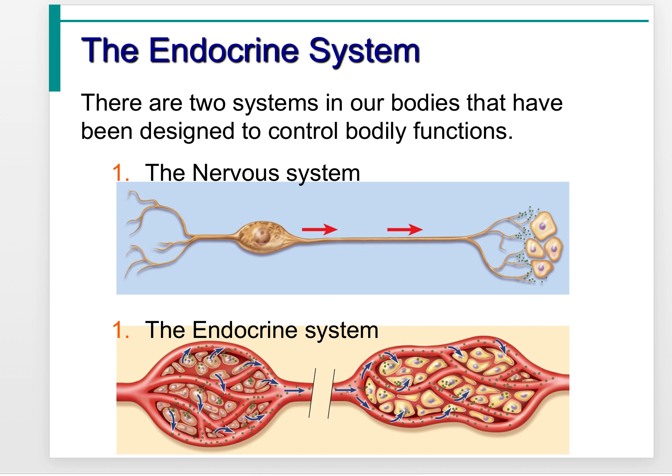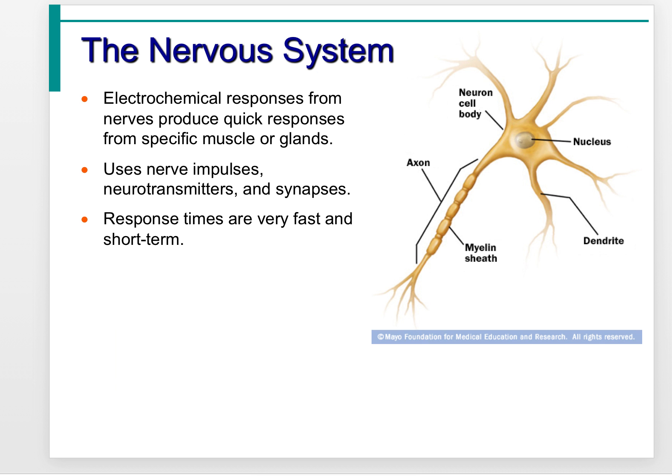There are two systems in our body designed for controlling bodily functions: the nervous system and the endocrine system. The nervous system is made up of neurons, which produce electrochemical responses from nerves and quick responses from specific muscles or glands. They use neurotransmitters, nerve impulses, and synapses to convey information. Response times are very fast and very short-term.